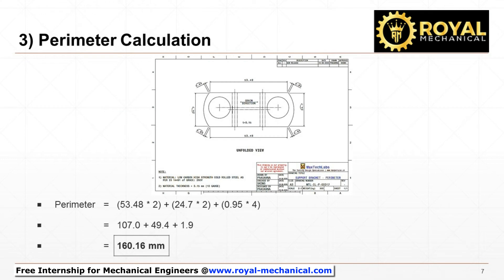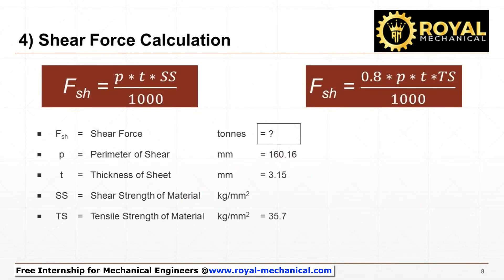The illustration shows the length of each element in shape. Perimeter is the total length of the shape being sheared. By adding the lengths of each element, we get the perimeter equal to 160.16 millimeters. We also know that the thickness of the sheet is 3.15 millimeters, and the tensile strength of the material is 35.7 kg per square millimeter. The value of the material's tensile strength is obtained from Indian standard document number IS14491. Substituting all the values in the formula, we calculate the shear force as 14.41 tons.